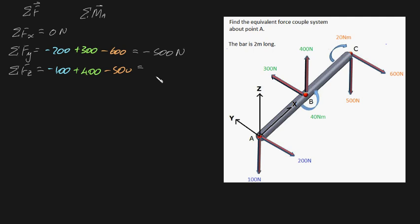The equivalent force we can draw at A is, in vector form, zero, minus 500, and minus 200. Notice that each element corresponds to the net force in the x, y, and z direction, respectively.